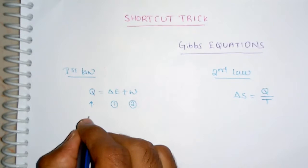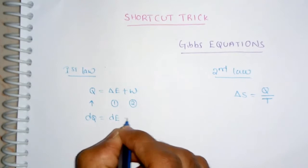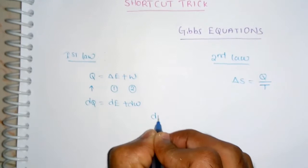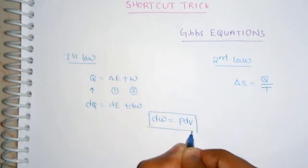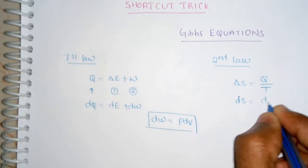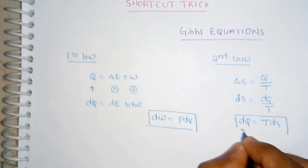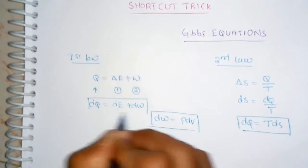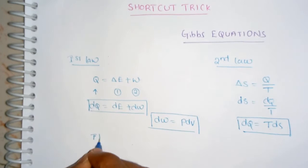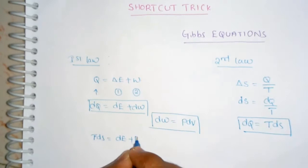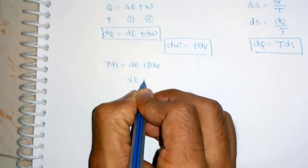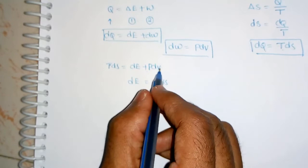For small quantities, DQ = DE + DW. We already know the work function DW = PDV. Also for small quantities, DS = DQ/T, so DQ = TDS. Substituting DW = PDV and DQ = TDS into the relation, we get TDS = DE + PDV.